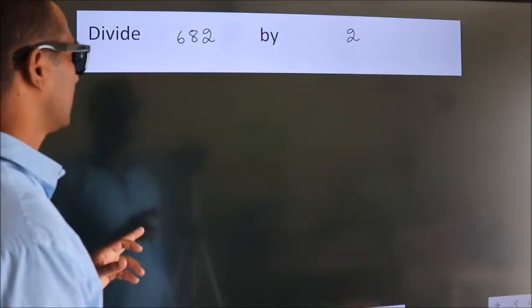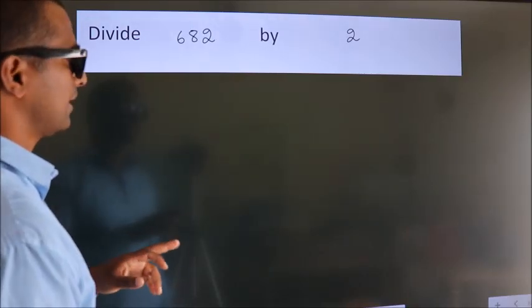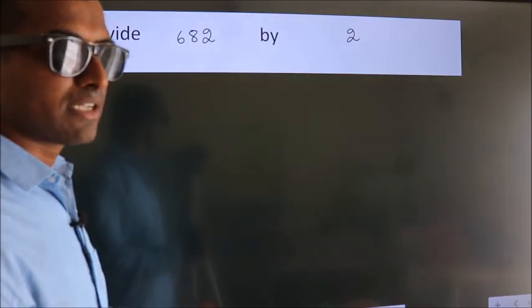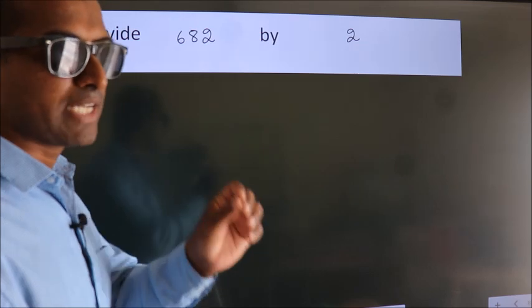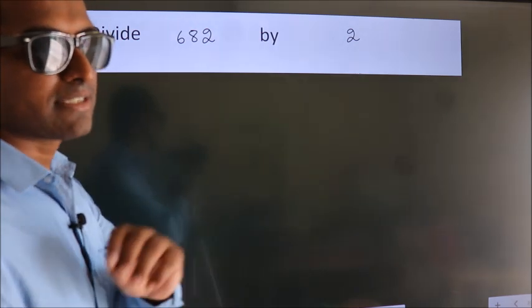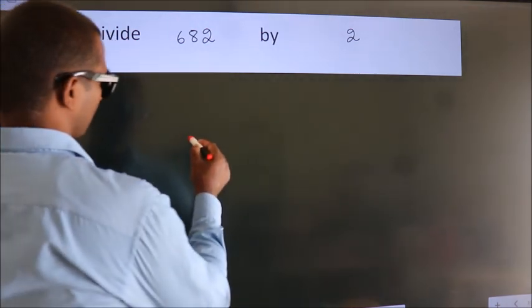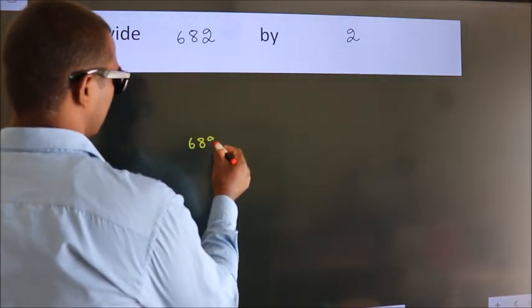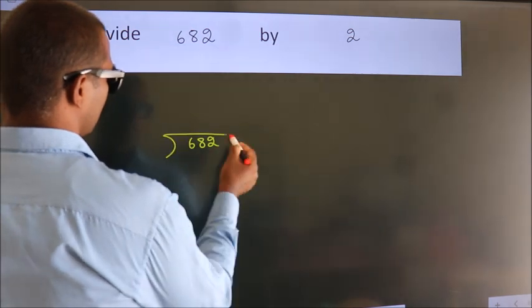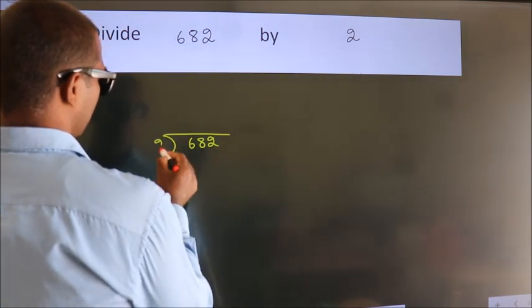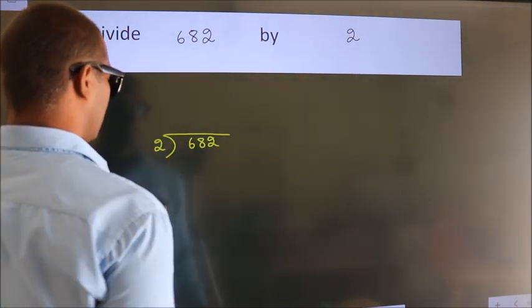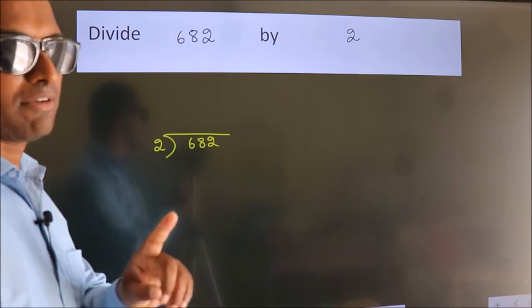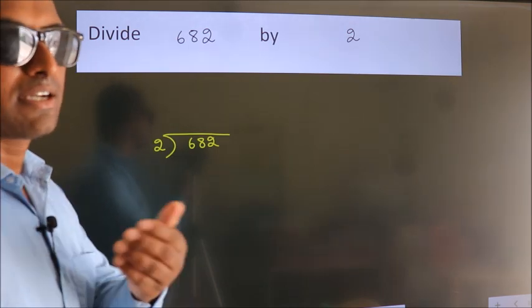Divide 682 by 2. To do this division, we should frame it in this way: 682 here, 2 here. This is your step 1.